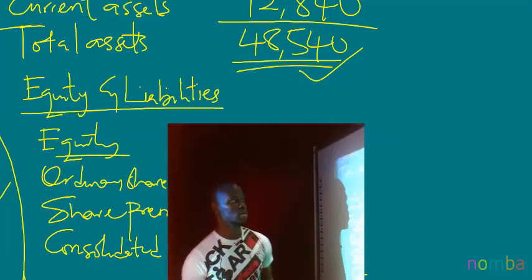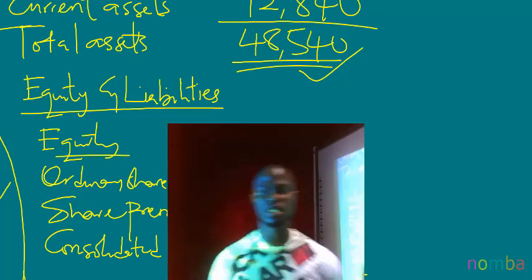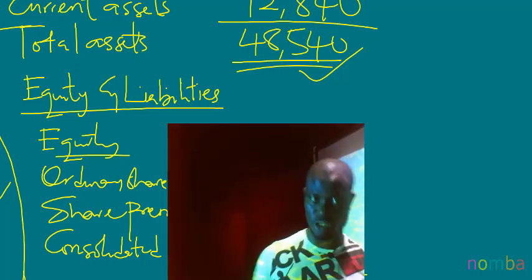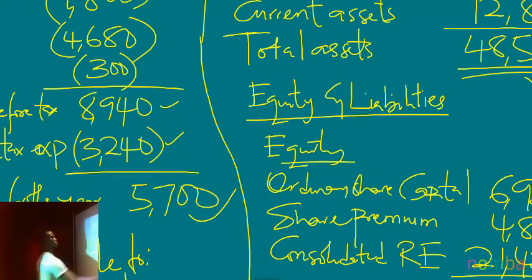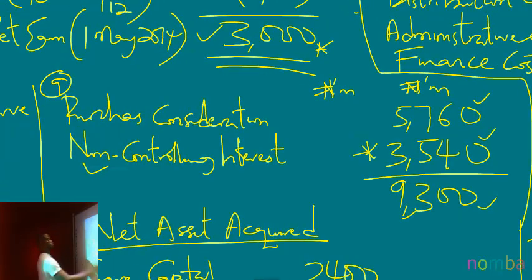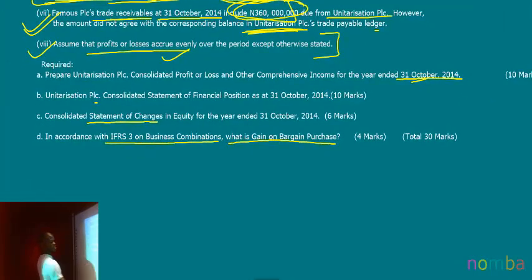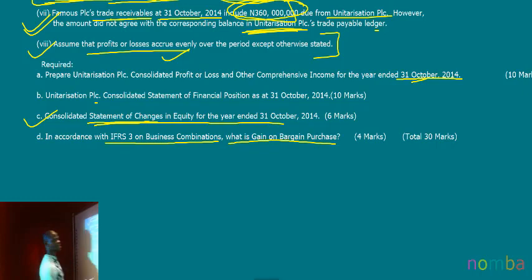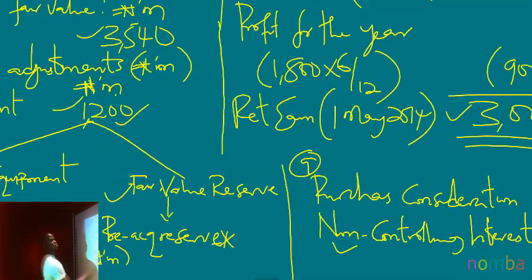Welcome back. In the last video we were able to successfully prepare and present the consolidated statement of financial position, but it was unbalanced. Now I want to move on to the next requirement of the question, which is requirement C — to prepare a consolidated statement of changes in equity for the year ended 31st October 2014.